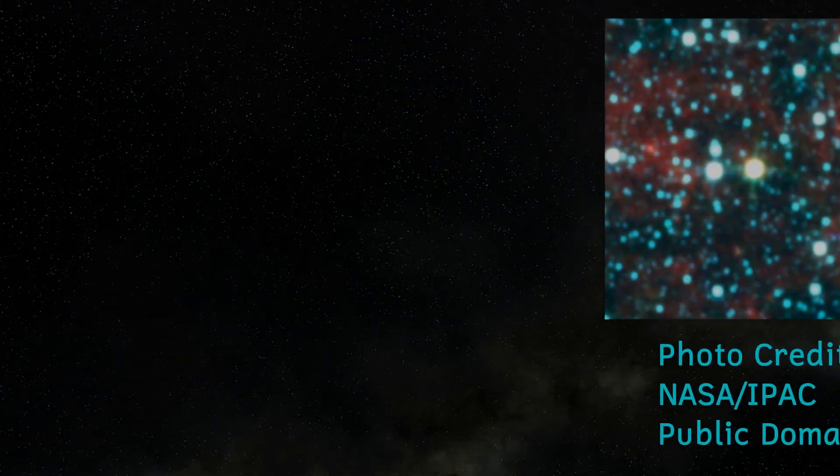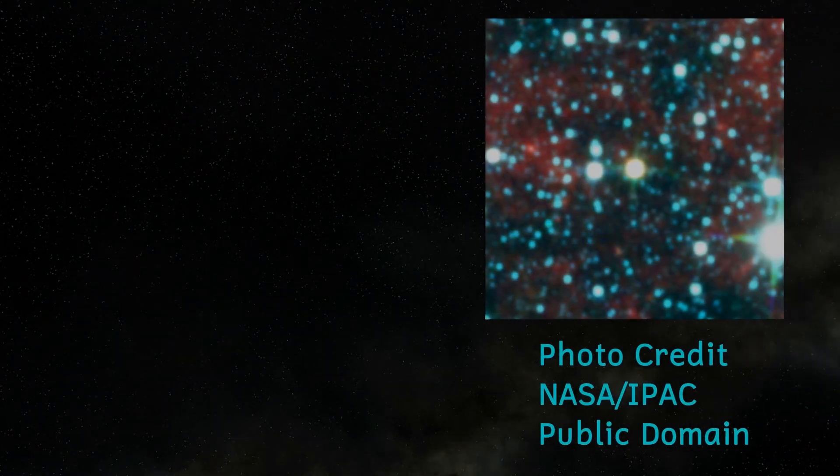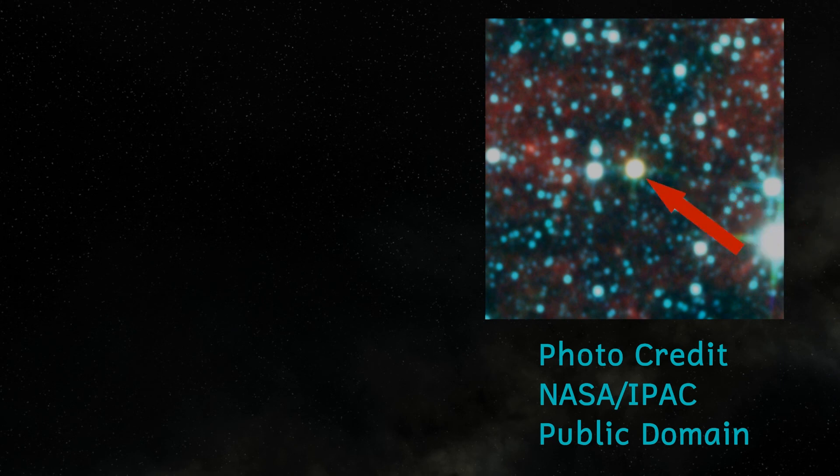We've actually directly imaged these objects. This image from NASA shows a bright point in the center which is in fact the two brown dwarfs together. The resolution was not sufficient to discern each object individually.